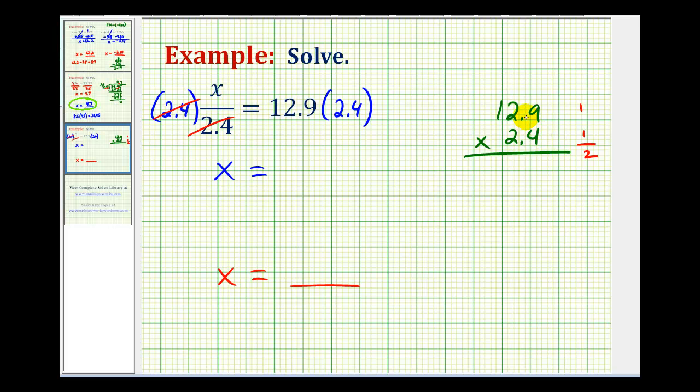So now we'll go ahead and multiply, ignoring the decimal points, and then we'll put the decimal point in the correct position after we multiply. So 4 times 9 is 36. So we put a 6 here, carry a 3. 4 times 2 is 8, plus 3, that's 11. Carry a 1. 4 times 1 plus 1 would be 5.